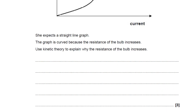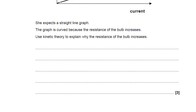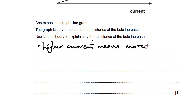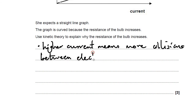The conductor — the wire — is made up of many little particles called ions. They are the nucleus and the rest of the electrons of the atom. It's also made up of some free electrons. When there is a current, the free electrons are moving, and a higher current means they're moving faster. So a higher current means more collisions — more collisions between the electrons, the charge carriers, and the ions, or you could say the atoms.